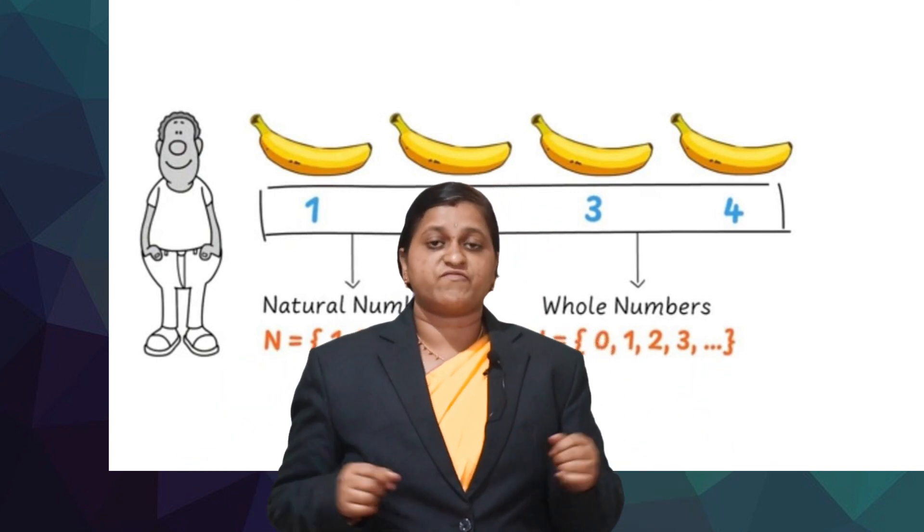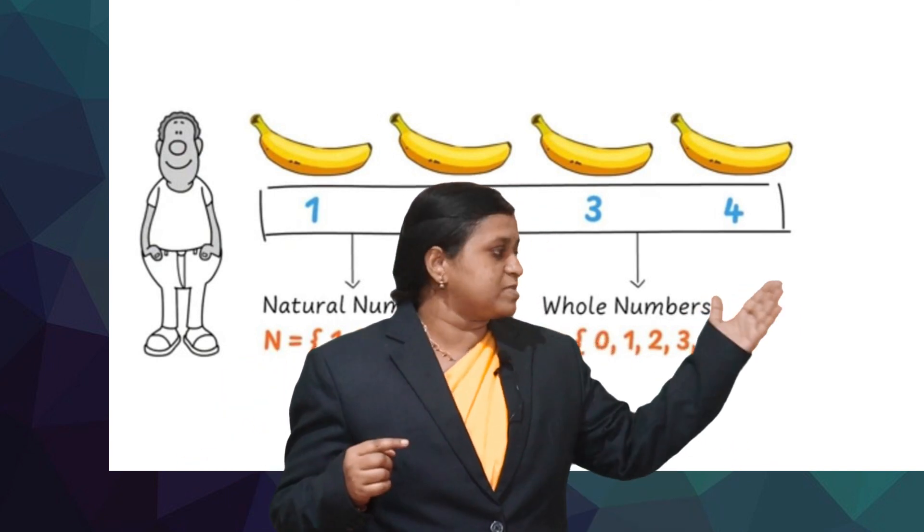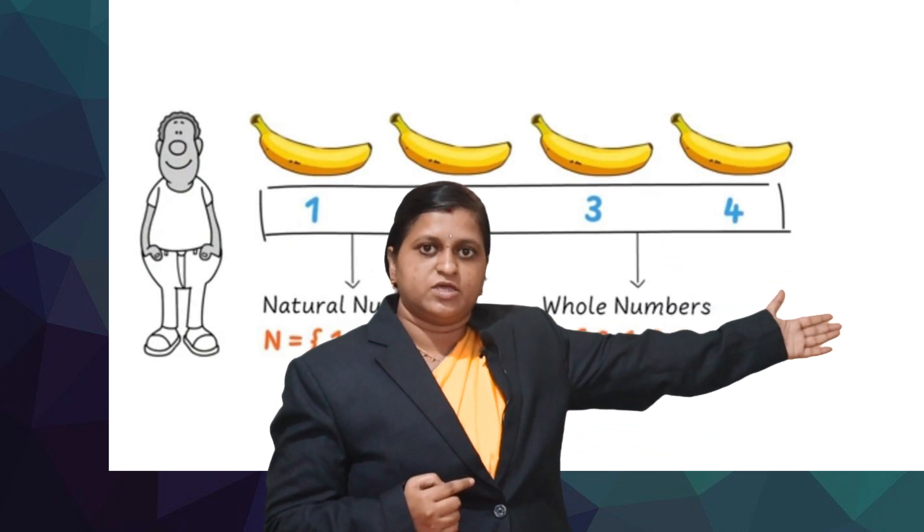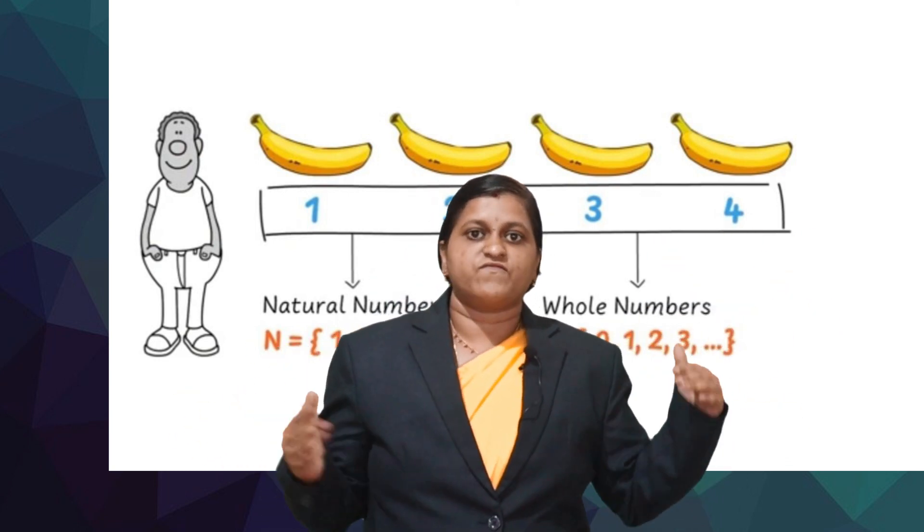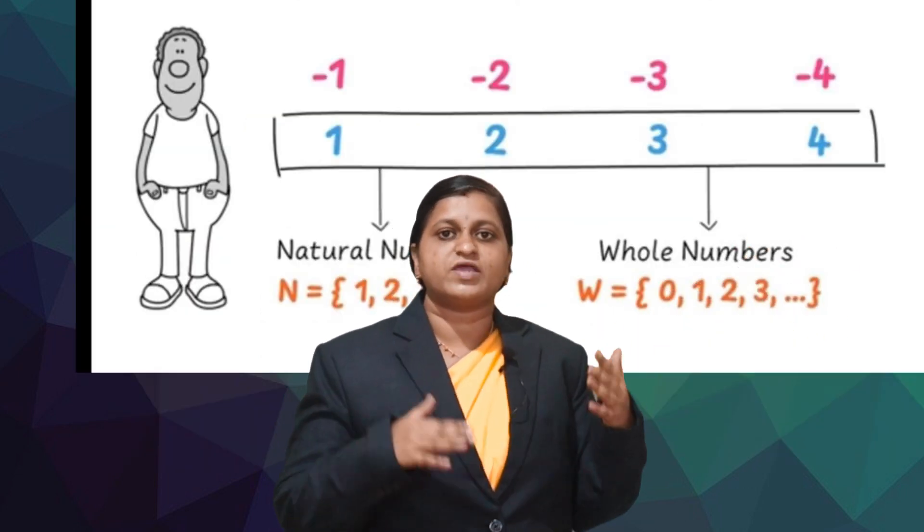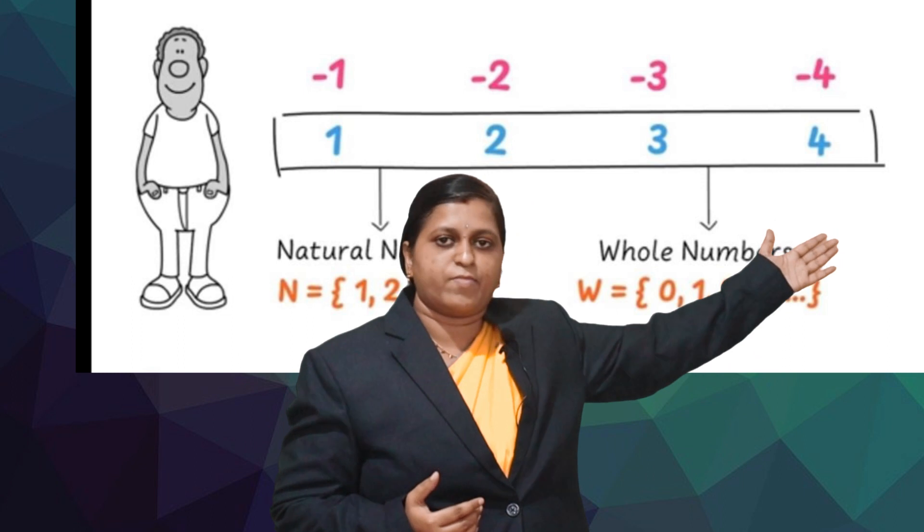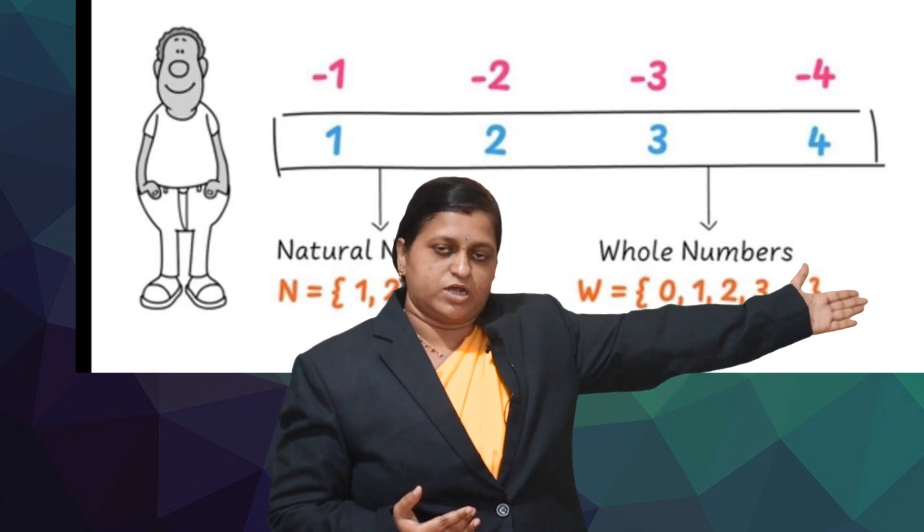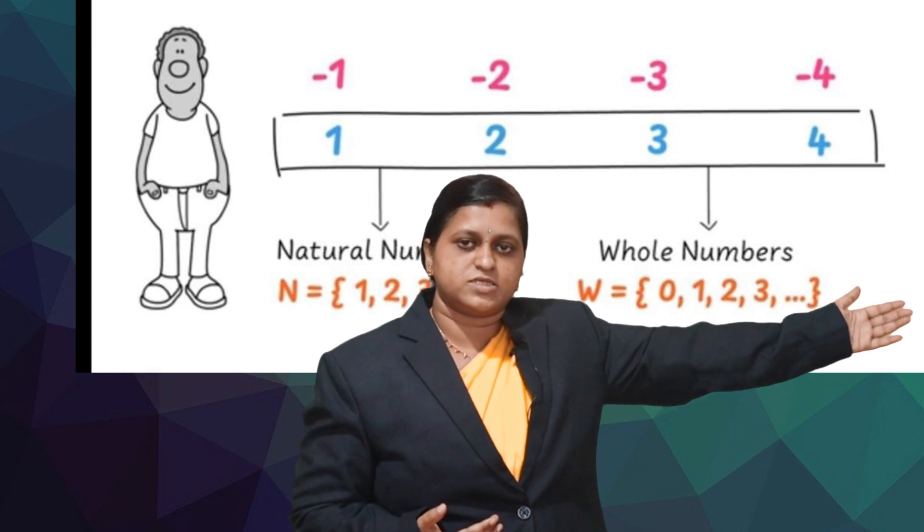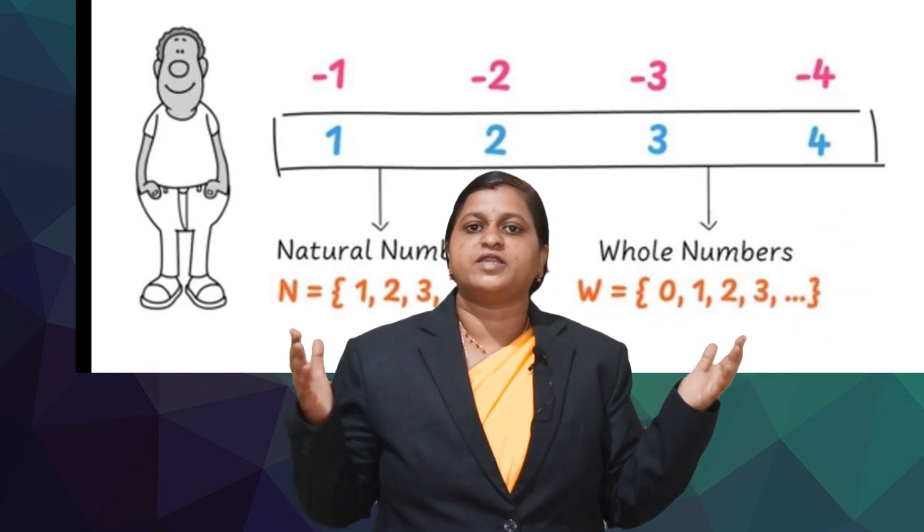Let us consider Mr. Tom. If he eats one banana, we subtract one from this collection, we write minus one. If he eats two bananas, we subtract two from this collection, we write minus two. If he eats three bananas, we write minus three and so on. These minus one, minus two, minus three, minus four and so on are called negative numbers.